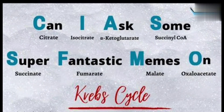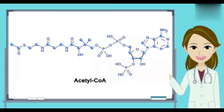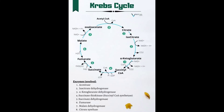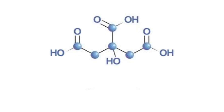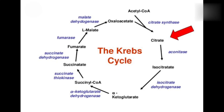Carbohydrates, proteins, and fatty acids are converted into the two-carbon compound acetyl CoA. Acetyl CoA is then converted into citrate with the help of the enzyme aconitase — citrate is a six-carbon compound. Next, citrate is converted into isocitrate, again with the help of aconitase.